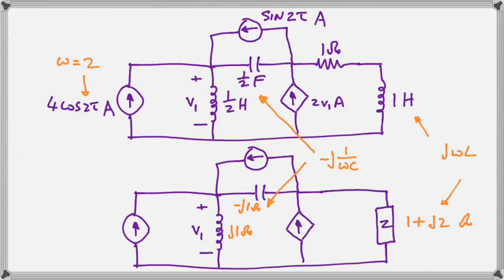We realize now that we have an interesting situation because our current source at the top is specified as sine rather than cosine. We take the cosine as 0 phase angle because cosine starts at 1 at 0, and sine is behind it.